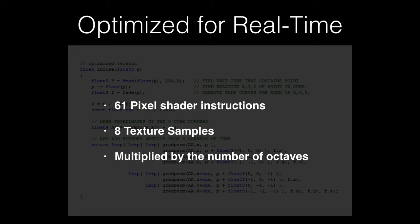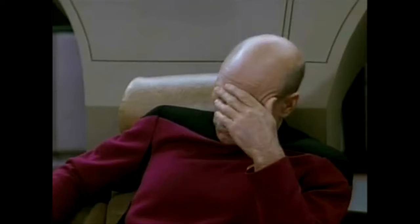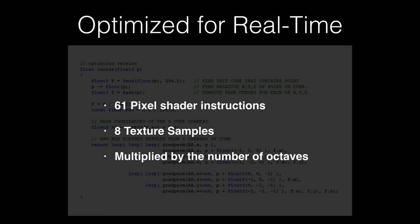You could be using as many as 488 instructions and 64 texture samples just for a noise mask — just for one part of your material. This is doable, but it's extremely expensive and not something we can realistically use all over the place. If you were to put this effect in your game, you would be sacrificing a lot of other things in order to pay the cost for Perlin noise. We need to find a more efficient way to do it.